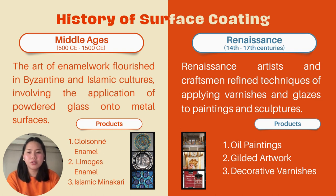The Renaissance period was a remarkable time in surface coating history, marked by a resurgence of art, science, and innovation. During this era, significant advancements were made in the development of painting techniques and materials, leading to a revolution in the world of surface coatings. Products from this era include oil paintings, where artists used layers of oil-based paint and varnish to protect and enhance their artwork; gilded artwork, where gold leaf coatings were applied to sculptures and decorative items to add a luxurious touch; and decorative varnishes used to protect and enhance the beauty of wooden furniture and musical instruments.